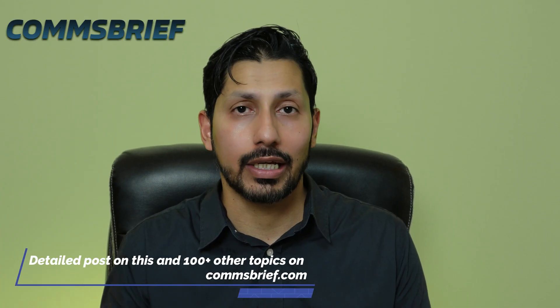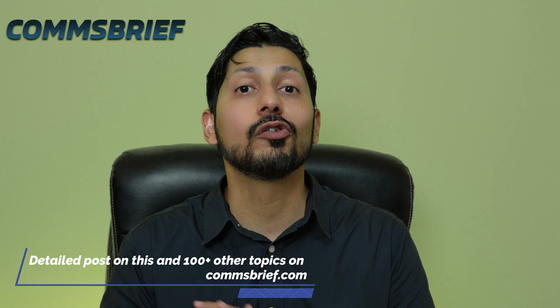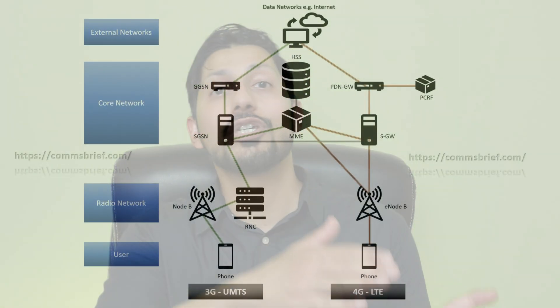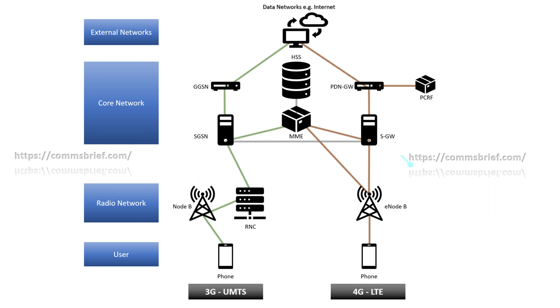The 4G LTE networks are packet switched only, meaning there is no circuit switch entity. The equivalent of SGSN on the 4G LTE network side is the Serving Gateway or SGW. The Serving Gateway is then connected to the PDN Gateway or Packet Data Network Gateway, which is a router just like GGSN.